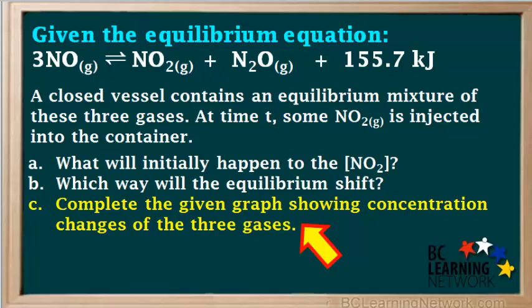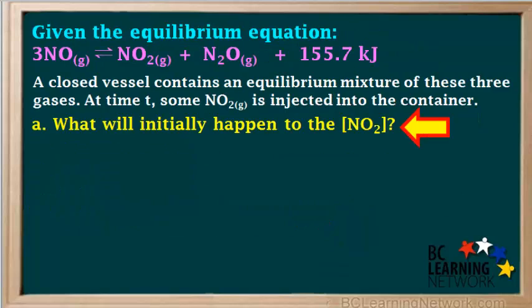In the third part of the question, we'll be given a graph and asked to complete it, showing the relative changes in the concentrations of the three gases over time. We'll start by answering question A: what will initially happen to the concentration of NO₂?